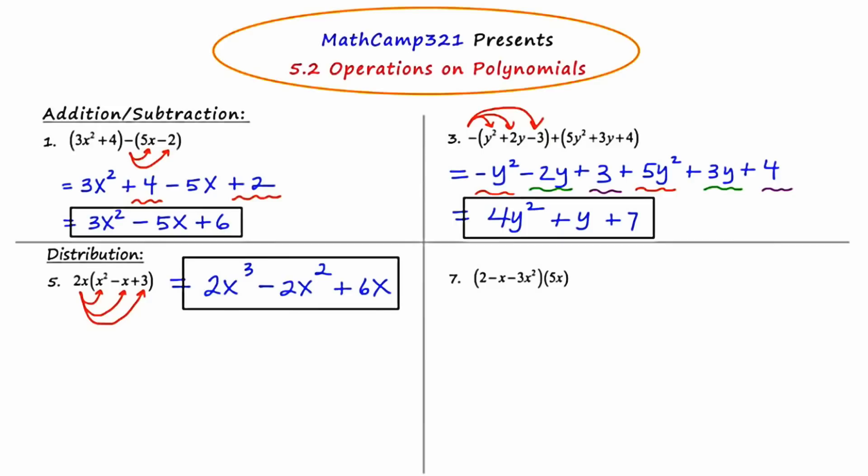In example 7, we need to distribute again, but this time the monomial is on the right-hand side and the polynomial is on the left-hand side. You can just distribute it leaving it the way it is, or if it bothers you having the monomial on the right, you could reverse the polynomial and the monomial. Multiplication is commutative, so the order does not make a difference.